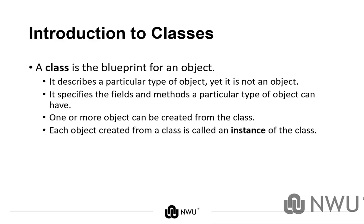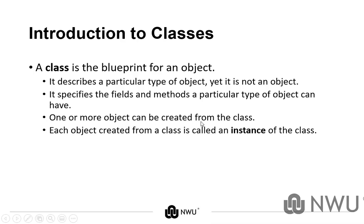What is a class? Well, essentially a class is a blueprint for an object, but the class itself is not an object — this is very important to remember. It describes a particular type of object but is not an object itself. It also specifies the fields and methods a particular type of object can have. For example, a ball object has a specific size, color, and volume — all of these can be used in a class as fields. Think of characteristics as fields you use in your class.